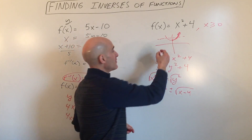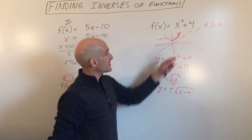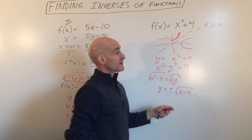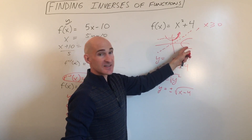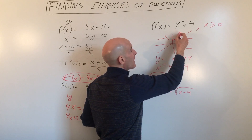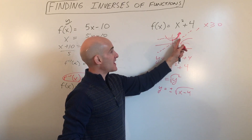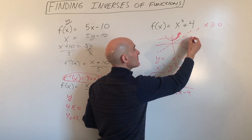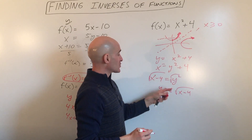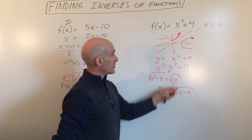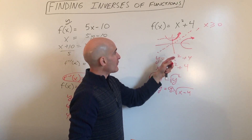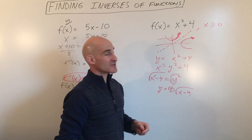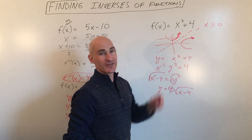Remember how inverse graphs are reflections over the line y equals x, this 45 degree line? If we reflect this graph over that line, we get a parabola that fails the vertical line test — not a function. But if we're just working with the positive branch, the part to the right of the x-axis, its reflection over y equals x is the part above the x-axis. So we only want the positive square root: y equals positive square root of x minus 4.